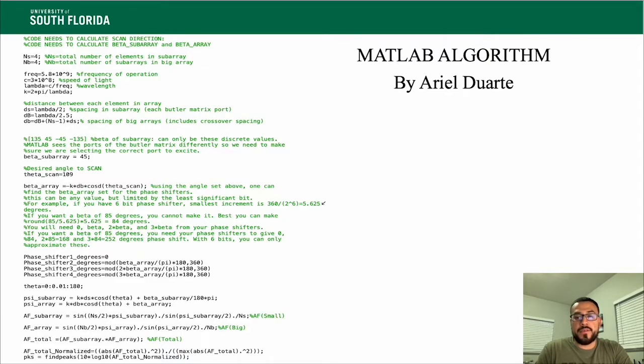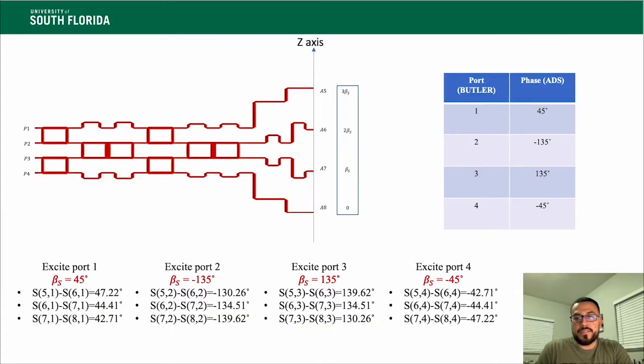We can also find the total array factor of the system, which in turn will allow us to visually map how the system will electronically scan. We'll see this in the next few slides. Each port of the Butler matrix exhibits a certain beta S, the phase progression of the Butler matrix ports. Exciting a different port will give you a different value for beta S. When scanning for a desired angle, one must decide on the state of the phase shifters.